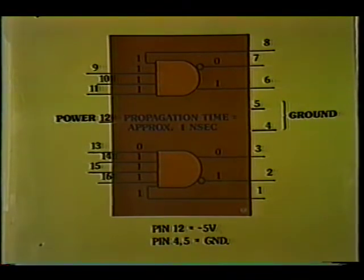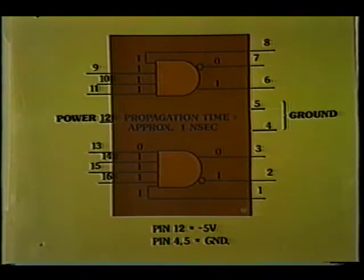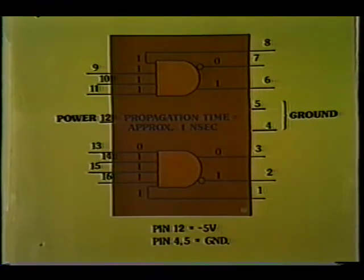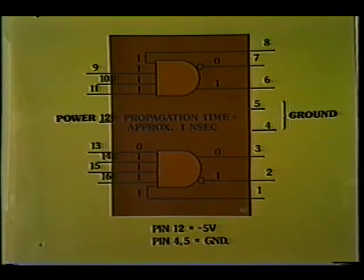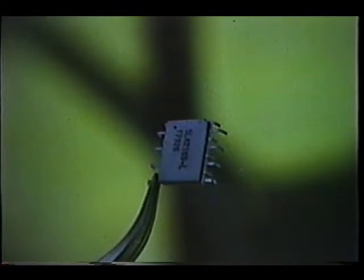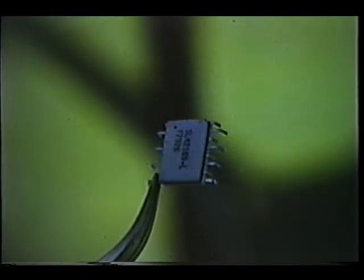13 of the 16 chip pins are assigned to gate inputs and outputs. Pin 12, one of the remaining pins, is tied to minus 5 volts. Pins 4 and 5 are tied to ground. The minus 5 volts is used for drive voltage only and does not produce the 1 or 0 logic levels. Looking at an actual chip shows that the pins are of two alternating lengths. This ensures that the chip will not be inserted backwards. The dot in one corner of the chip indicates the location of pin 1.